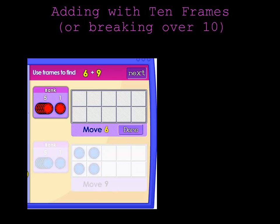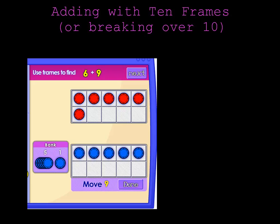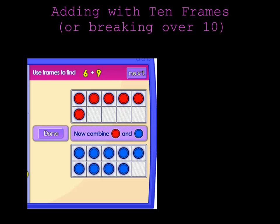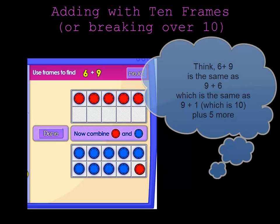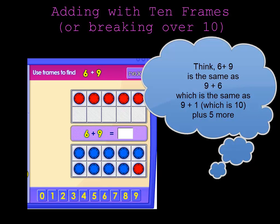Okay, let's do 6 plus 9. I'll put 6 chips in my top 10 frame and 9 chips in my bottom 10 frame. Now, it's really close to a group of 10. All I need to do is move 1 chip and instead of 6 plus 9, I get 10 plus 5 or 5 plus 10 which is 15.